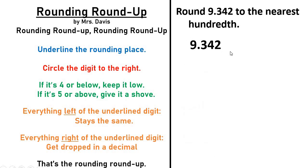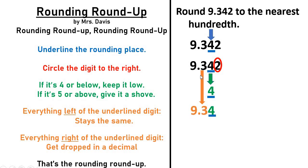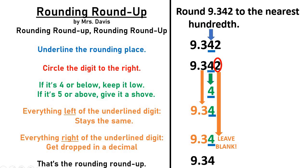Let's do one more example before you do your decimal puzzle. We're rounding to the nearest hundredths place. Underline the rounding place. Circle the digit to the right. If it's four or below, keep it low; if it's five or above, give it a shove. Everything left of the underlined digit stays the same. Everything right of the underlined digit gets dropped in a decimal. That's the rounding roundup.